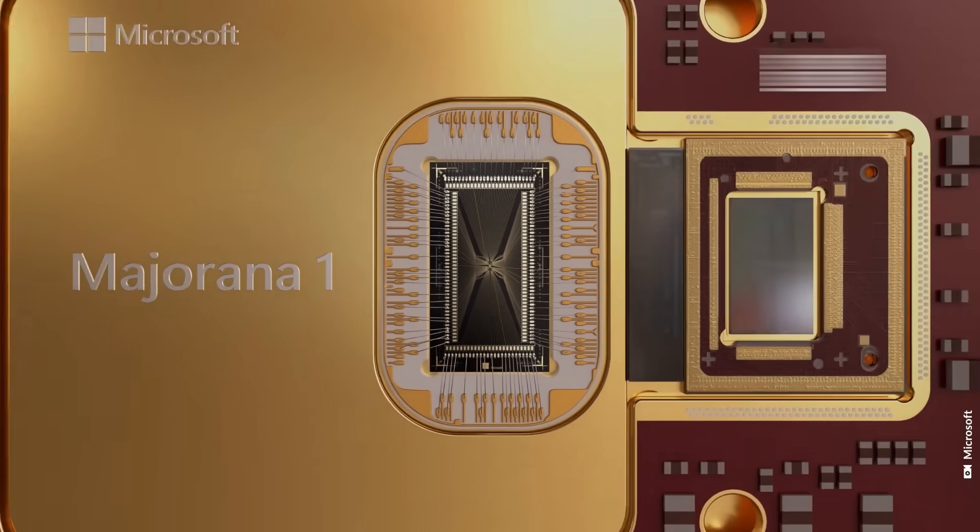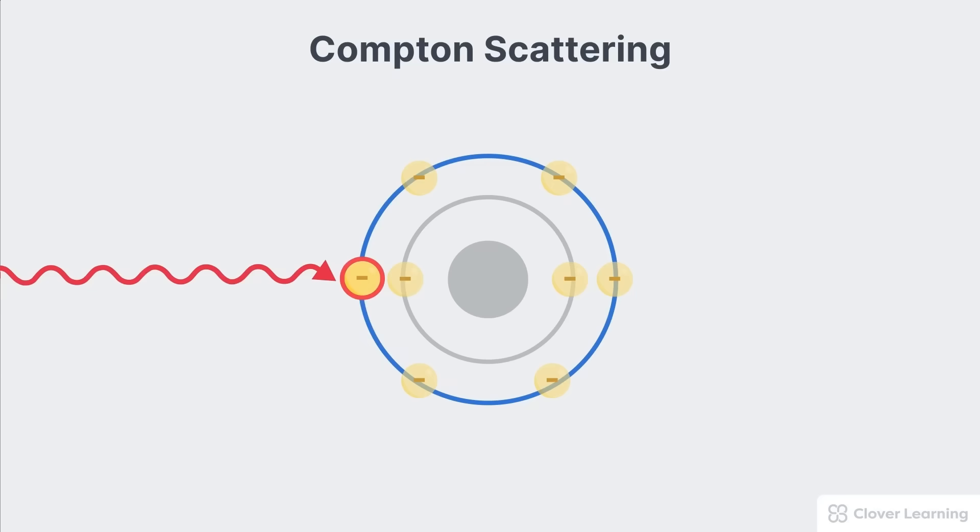Now, imagine integrating such a process into a quantum chip. The Compton Scattering Protocol, as hypothesized in this context, could allow a quantum processor to manipulate quantum states in ways that mimic these high-energy interactions.